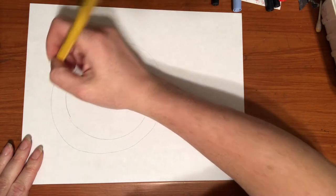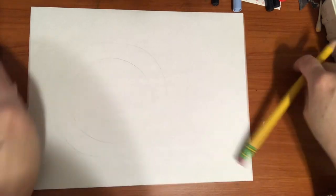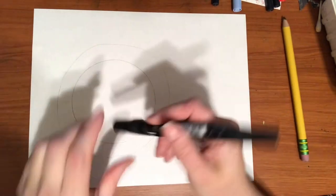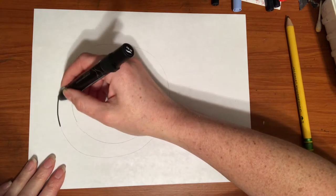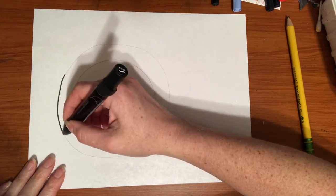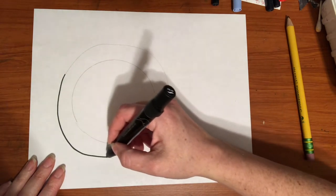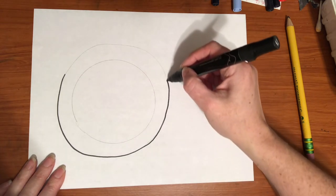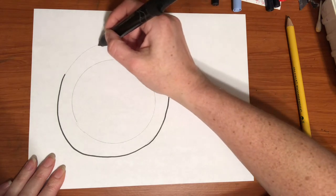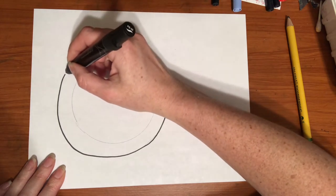Alright, so now I'm gonna take my black marker and I'm gonna put the black marker around the outside of the bowl. The inside circle we drew is gonna be where our soup is. I'm just going around the edge and we've got it.